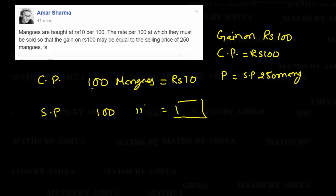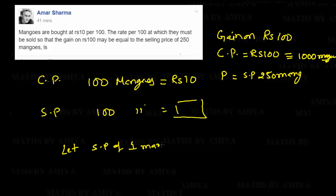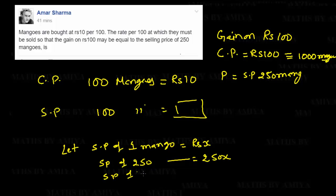At Rs.10 we get 100 mangoes, so at Rs.100 we would have 1000 mangoes. We have to calculate profit on the selling price. Let's assume the selling price of 1 mango is Rs.X, so the selling price of 250 mangoes is Rs.250X and the selling price of 100 mangoes is Rs.100X.